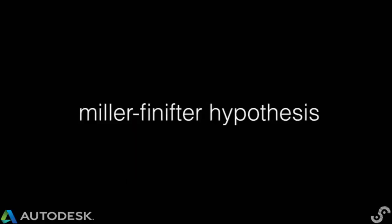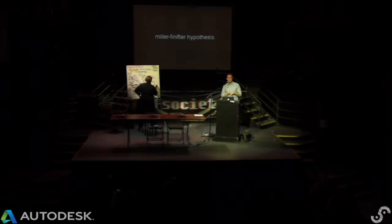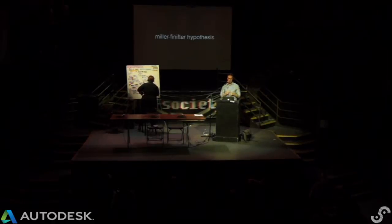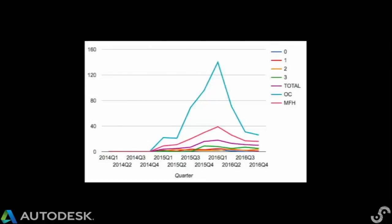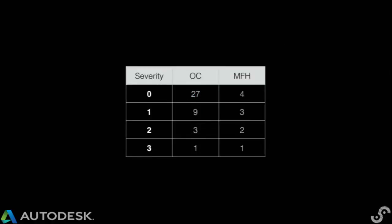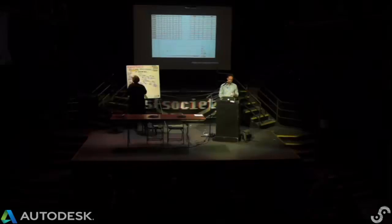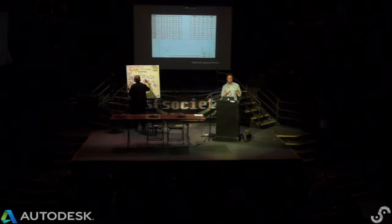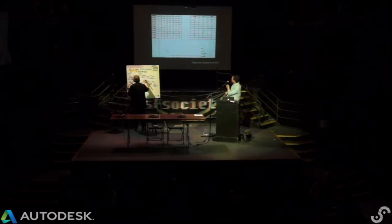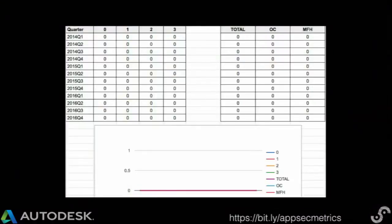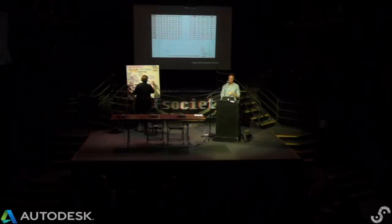I bounced this idea around with Dr. Matthew Fiddle-Nifter and Dr. Charlie Miller — PhDs in computer science and mathematics respectively — and they said just sum it all up, where things get step-level worse as you go up the scale rather than my crazy exponential badness. If you check out the bit.ly link, it goes directly to a Google Doc that has all these equations in it already. You can do file, copy, and plug your own data in to see how you're doing over time and whether the work you're doing is actually paying off.